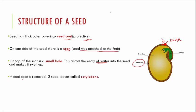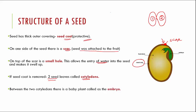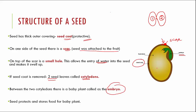Looking inside the seed, you will find two small seed leaves called cotyledons. If you take a peanut seed and cut it open, it looks like two seed leaves — these are the cotyledons. Inside, between the two cotyledons, you find a tiny baby plant called the embryo. The embryo has baby roots and baby shoots, and it is protected and provided with nutrition from the cotyledons.